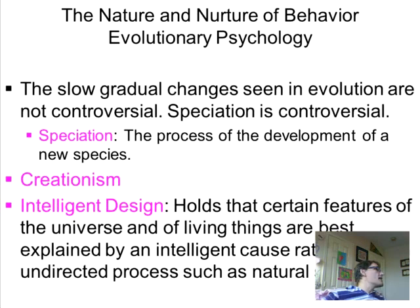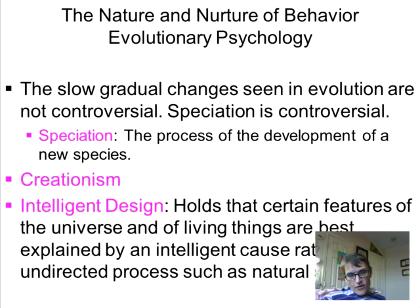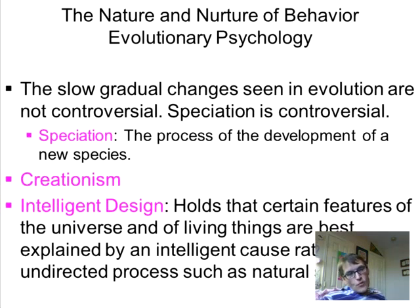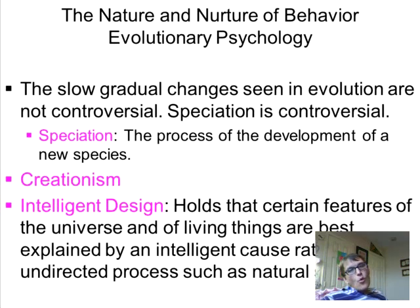Where evolution becomes very controversial is the act of speciation — actually changing from one species to another. That's where the controversy comes from. There are other explanations for how the world works: creationism and intelligent design are two other theories which help explain the way the world is today.